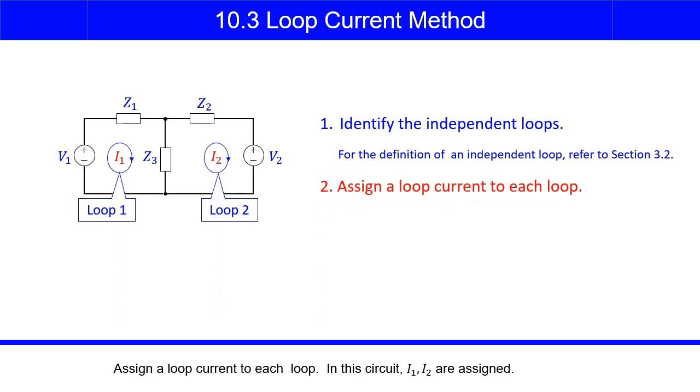Assign a loop current to each loop. In this circuit, I1 and I2 are assigned.